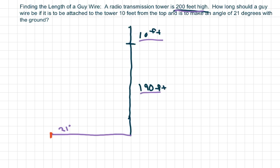So we're attaching some wire to the ground here and going up to the 10 feet here. That's what a guy wire is. That's going to hold the radio transmission from swaying in the wind and all that. Basically, we want to find how long should this guy wire be.